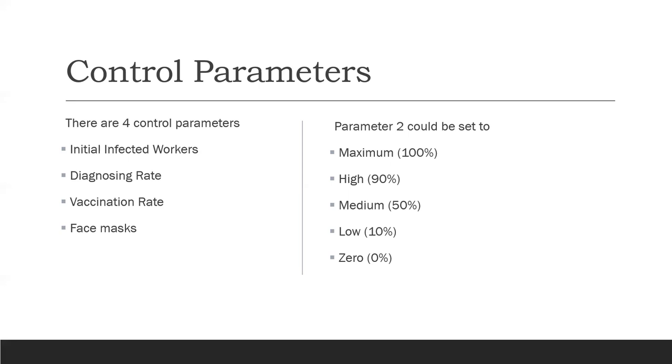Vaccination rate means the rate of vaccinating normal people to become immune. In this model, only the normal people can be vaccinated in order to go into the stage of immunity.